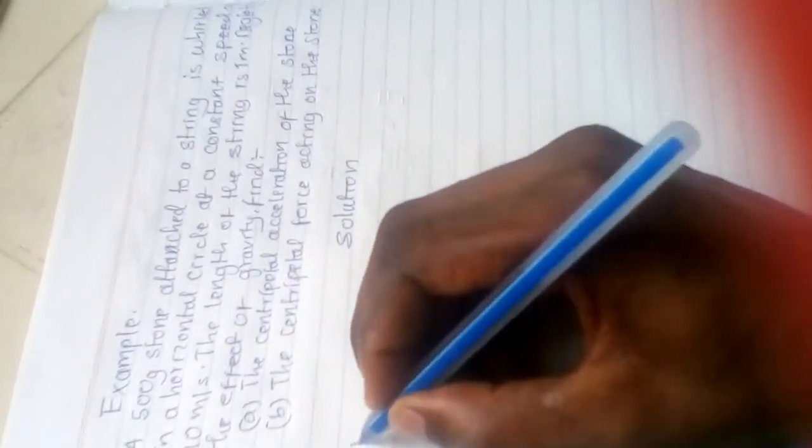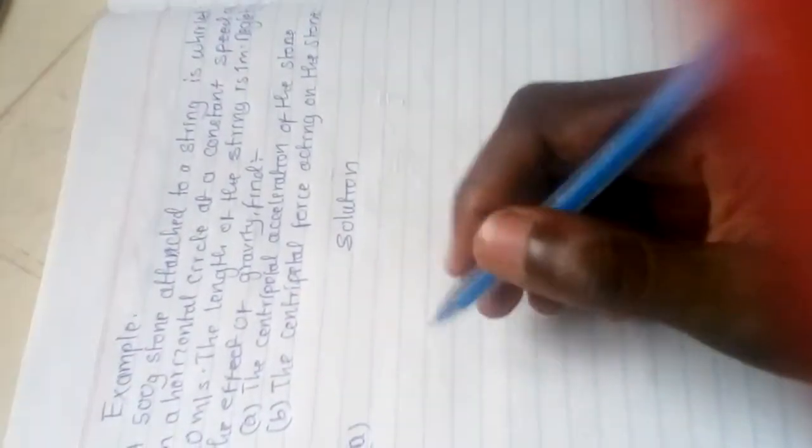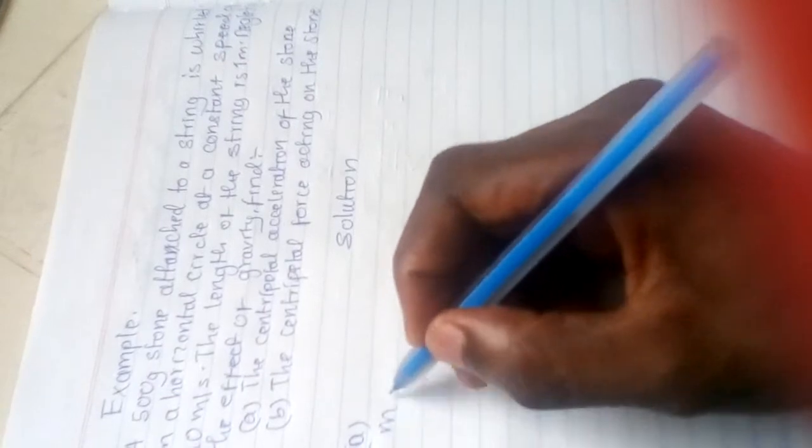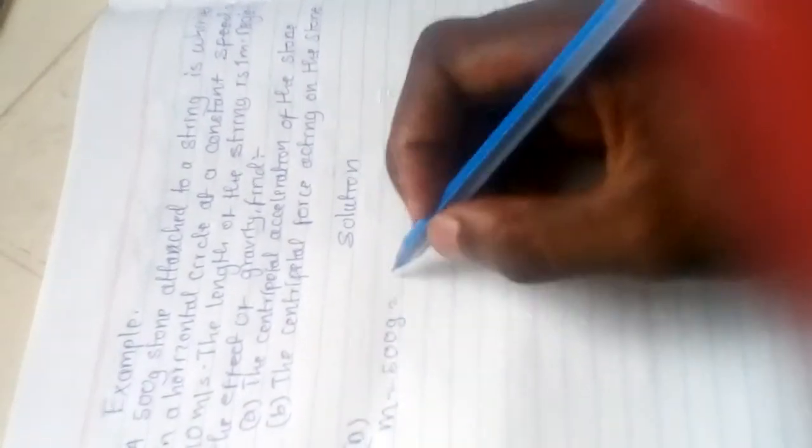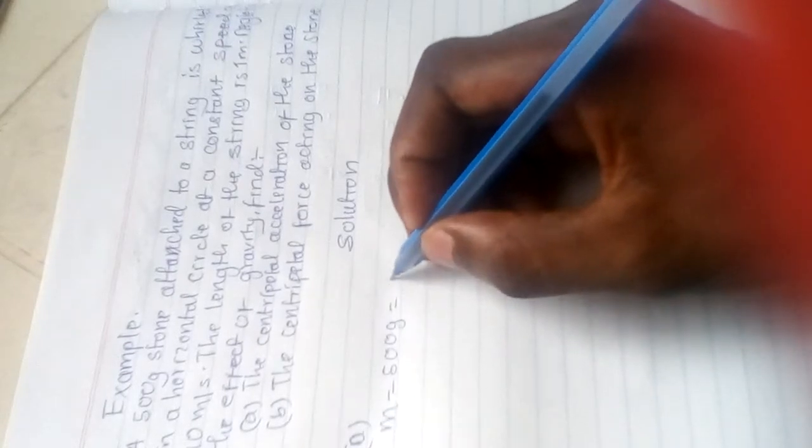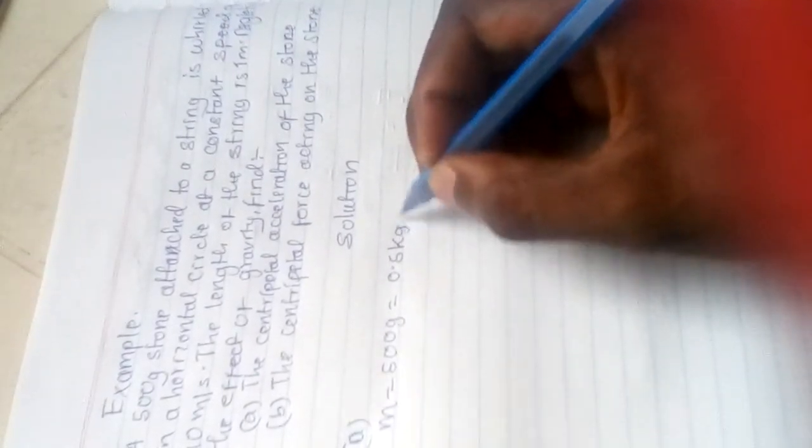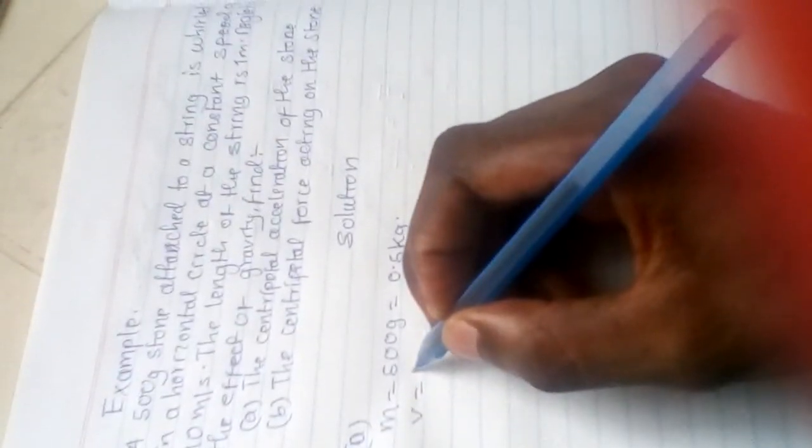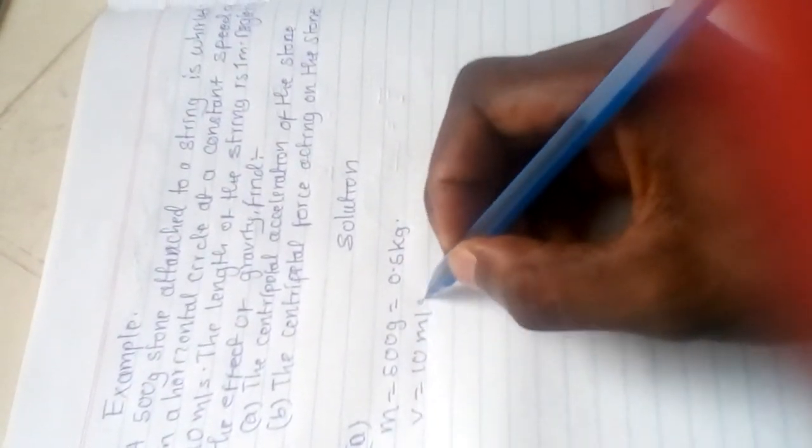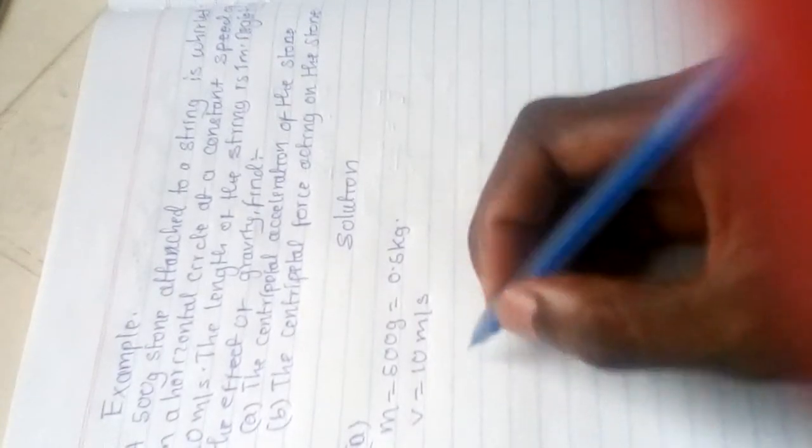Starting the solution. For part A, we have mass given as 500 grams. We need to convert to kilograms, which gives us 0.5 kilograms. We have velocity given as 10 meters per second.